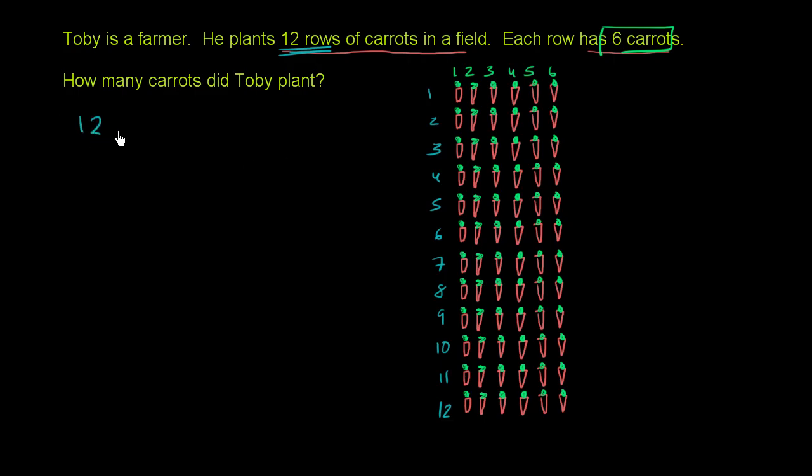You're going to have 12 rows and each of those, you have 6 carrots. So you could say you have 6 carrots 12 times. So it's going to be 12 times 6.